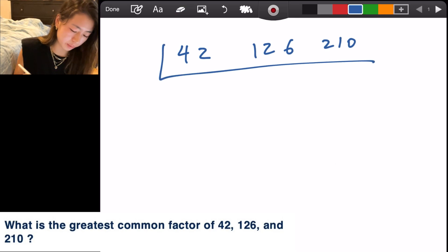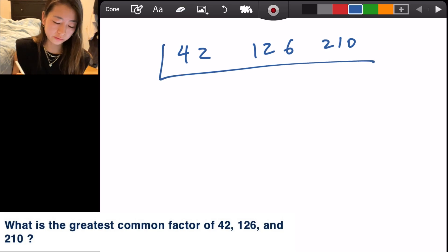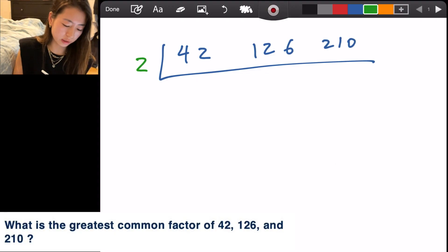Then I draw this L-shaped line and what I'm going to do next is look for small common factors between them. Here I can see everything's divisible by two. So I write the two on the left side and then 42 divided by two is 21, 126 divided by two is 63, 210 divided by two is 105.